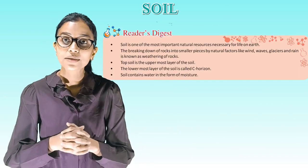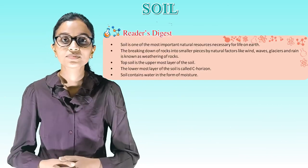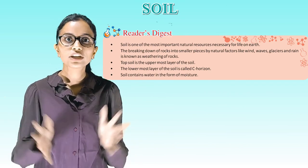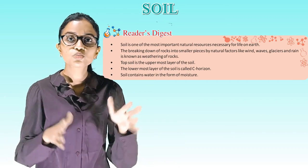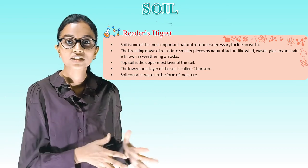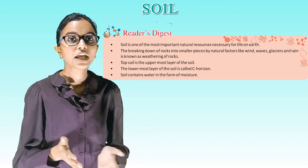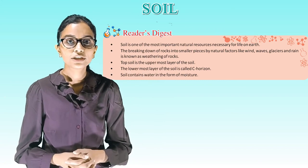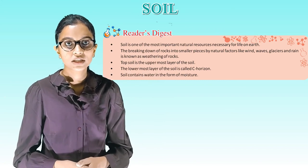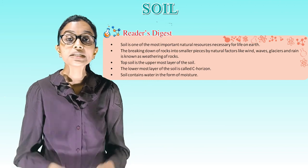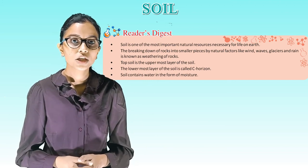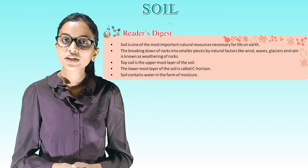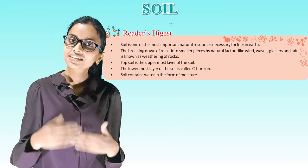Summary: Soil is one of the most important natural resources necessary for life on earth. The breaking down of rocks into smaller pieces by natural factors like wind, waves, glaciers and rain is known as weathering of rocks. Topsoil is the uppermost layer, and the lowermost layer is called C horizon. Soil contains water in the form of moisture. That's all for today — we will meet in the next class. Bye!